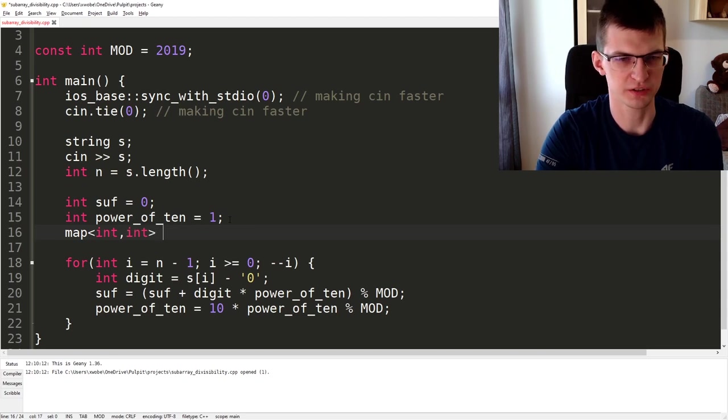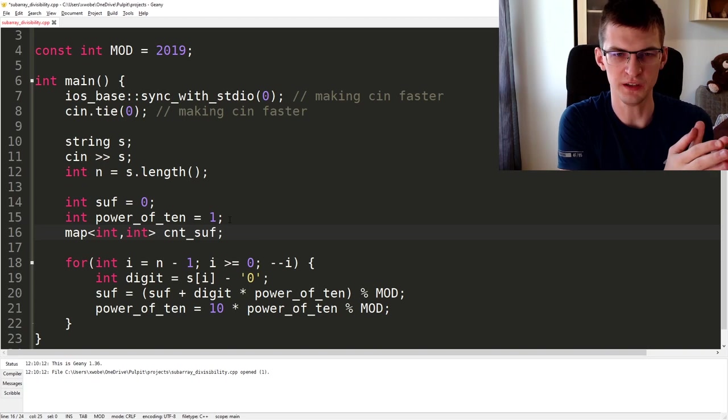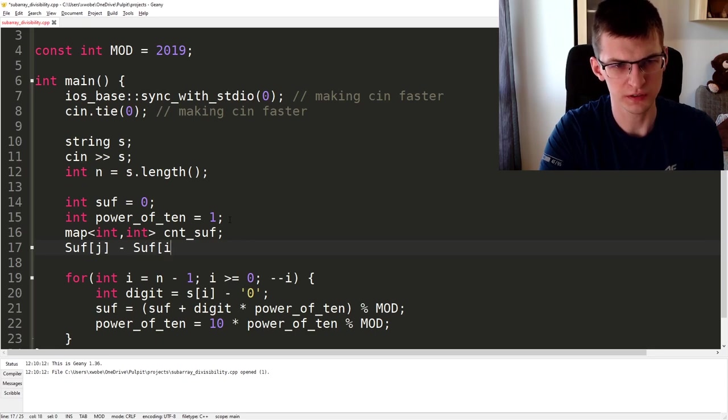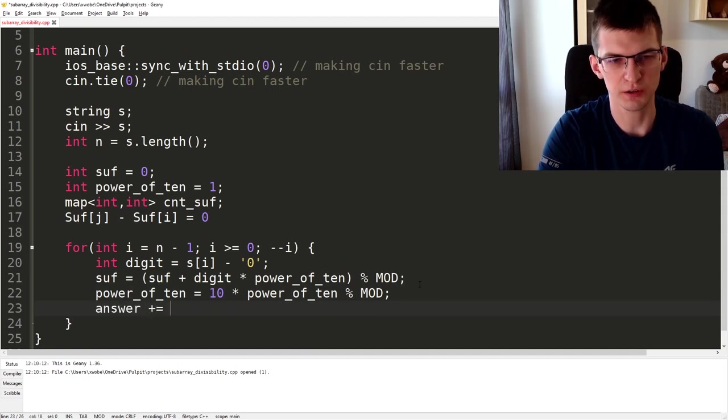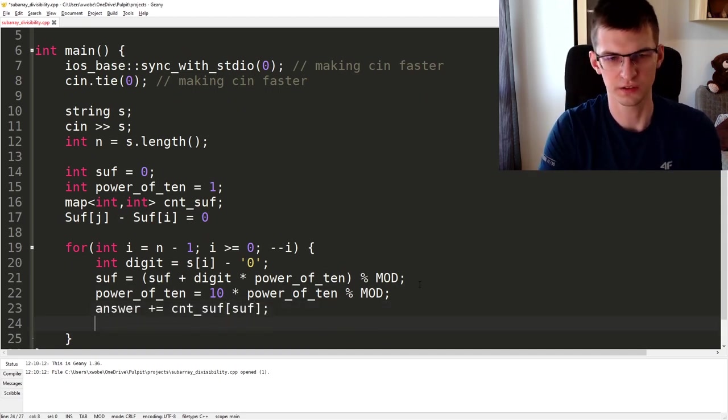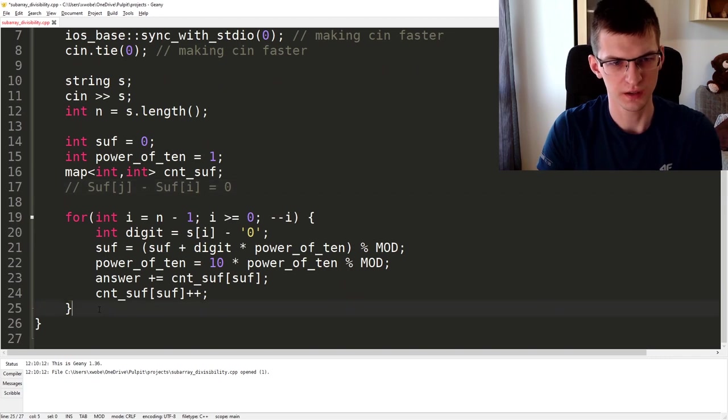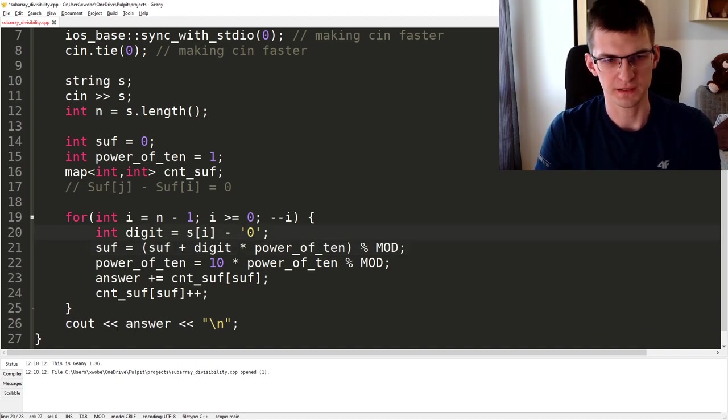The same way as subarray equals k, I can keep track of a map. Later I will change that to something else. Count occurrences of this suffix. If value of 50 occurred already three times and now I again have value of 50, I know I can pair them up. Remember I want something like that to be true: suffix of i equals 0 modulo M, so those two things need to be equal modulo M. Answer plus equals count suffixes that already occurred equal to this, and update the count. At the end we need to print answer with a newline.